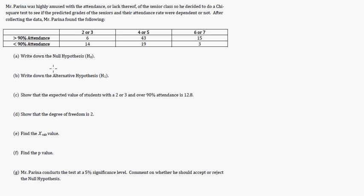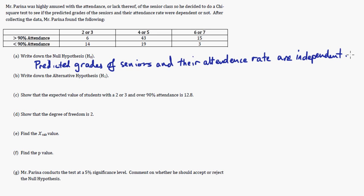Write down the null hypothesis. The null hypothesis is going to be: predicted grades of seniors and their attendance rate are independent. The important thing there is you just make sure it's independent.